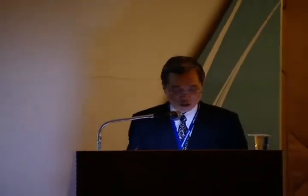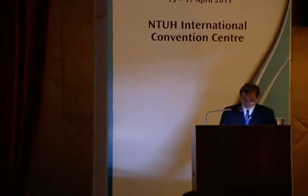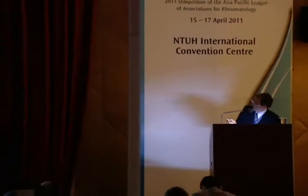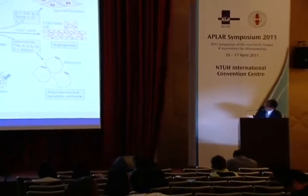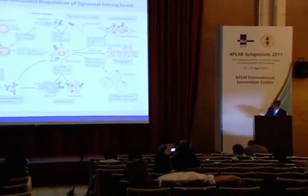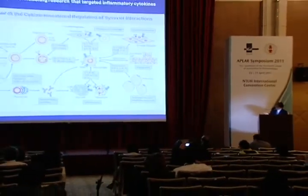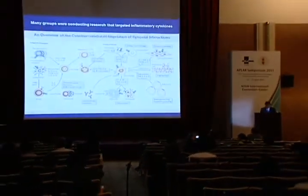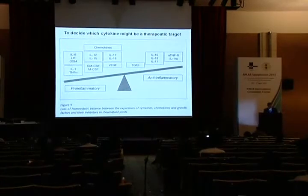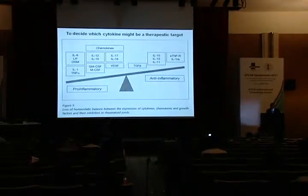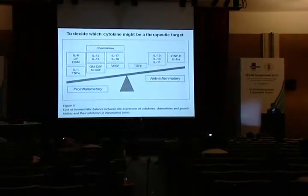Many groups also conducted their research targeting primary cytokines. Some cytokines will affect osteoclasts and osteoblasts, some affect cartilage, and some affect synovial fibroblasts. But the first question is how to decide which cytokines might be a priority target.